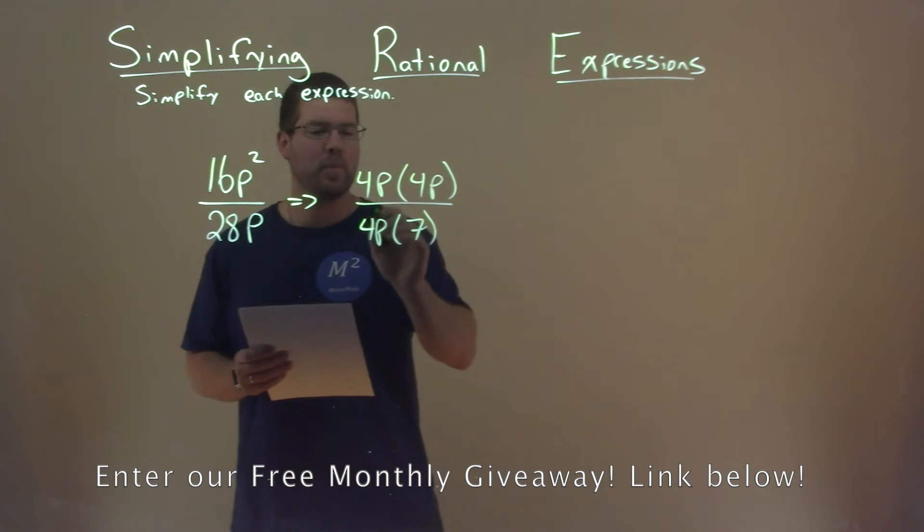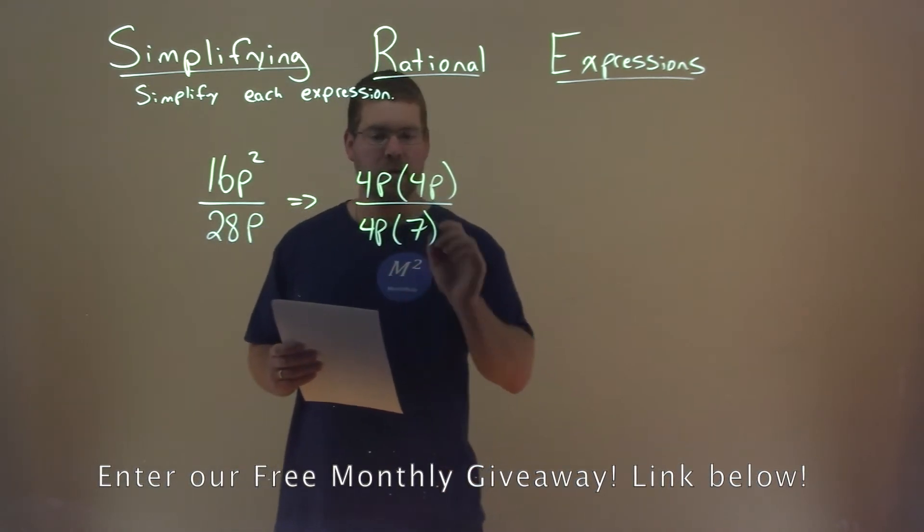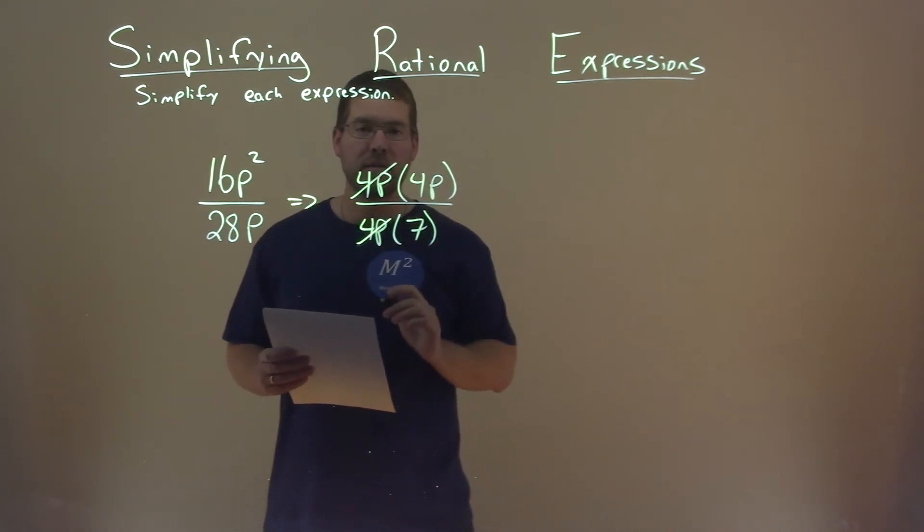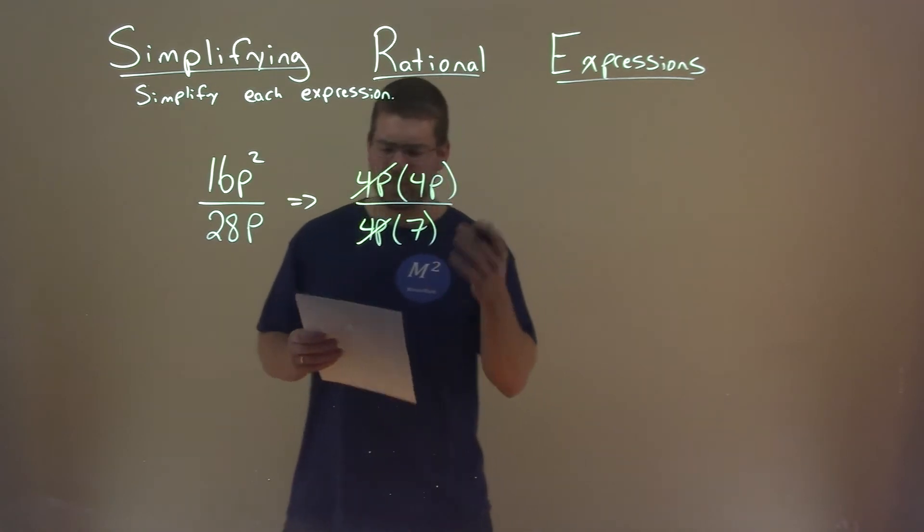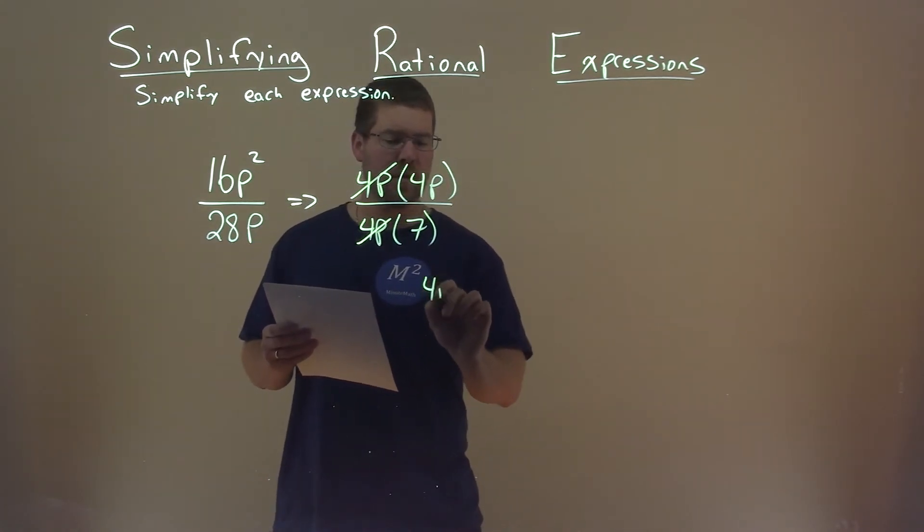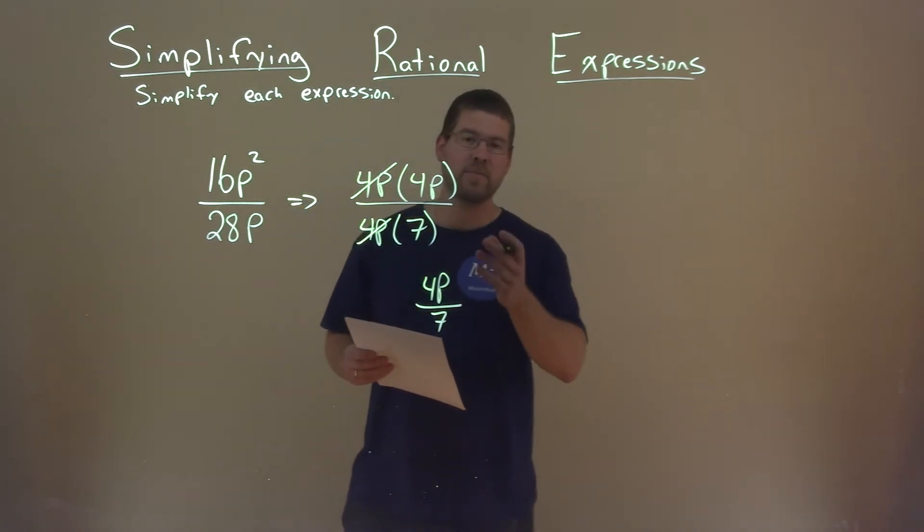Now, notice, we have a 4p and a 4p right here. They eliminate each other, we're going to cancel each other out, and we're left with just the numerator being 4p over the denominator, which is 7, and that is our final answer.